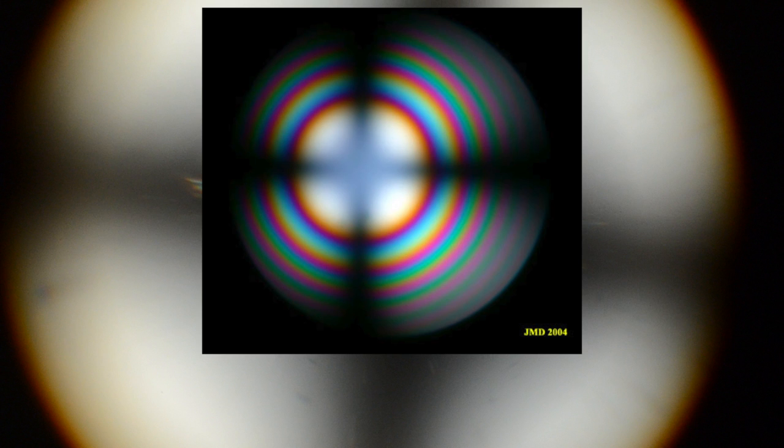Uniaxial minerals get their name because they have one optic axis. In all minerals, interference color bands circle the figure. Sometimes we don't see them because they are outside of our field of view in the microscope. These bands are called isochromes and they increase in order from the center.